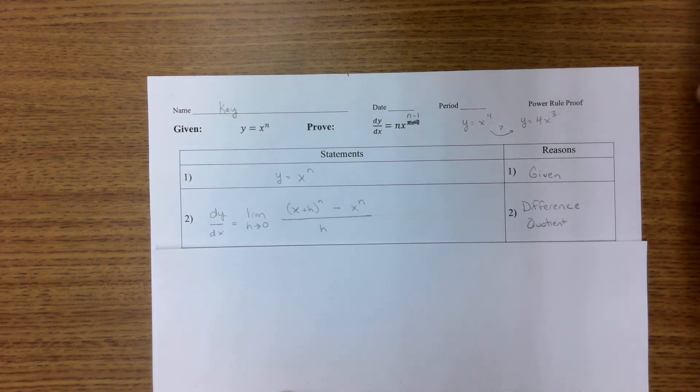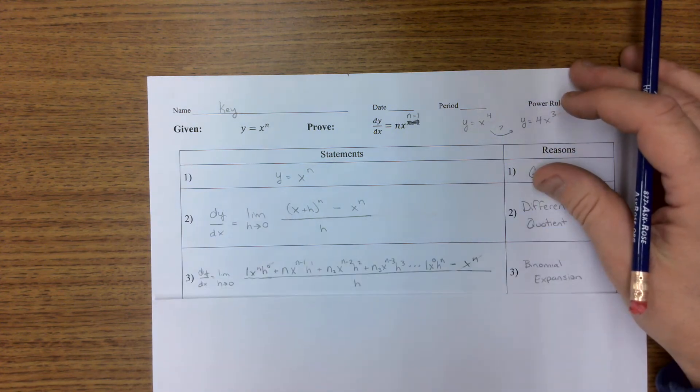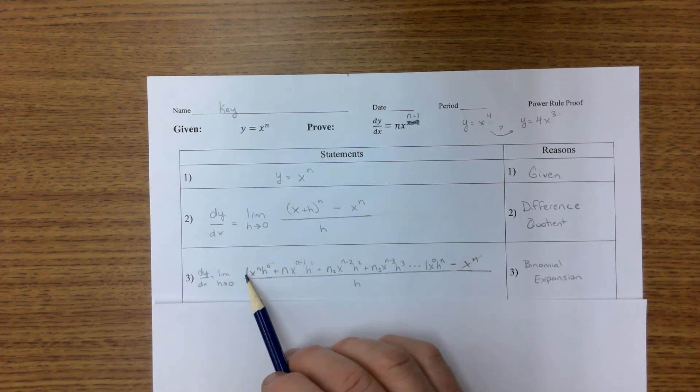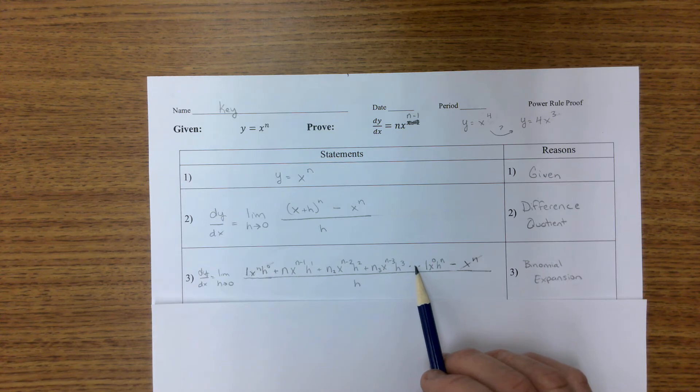All right, so now all we got to do is expand this binomial. Well how do you do that? Well it's this crazy expression right here, it's binomial expansion. The first coefficient's one and then we count down with the x's: x to the n, n minus one, n minus two, n minus three, dot dot dot forever till we get x to the zero.